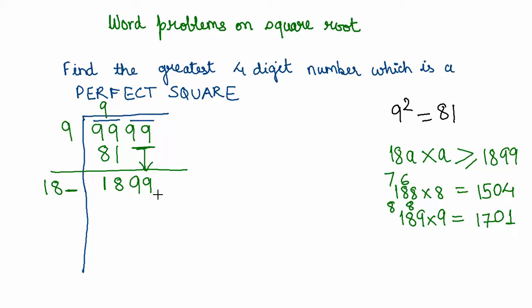This is actually the biggest number we can get—189 by 9. We cannot go beyond this. So 189 by 9 gives 1701. We subtract: 9 minus 1 is 8, 9 minus 0 is 9, 8 minus 7 is 1, so you get 198 as the remainder.